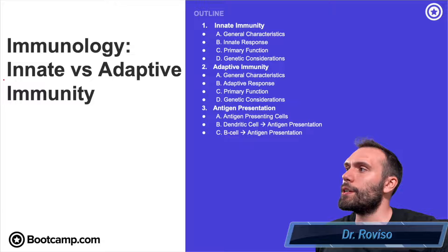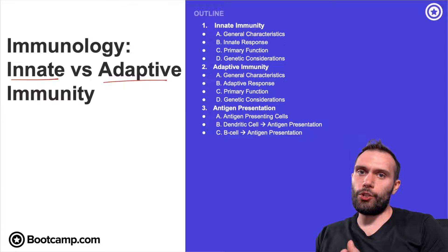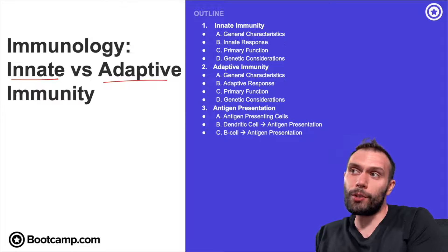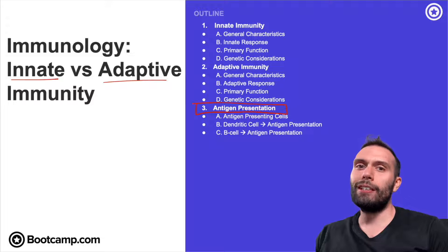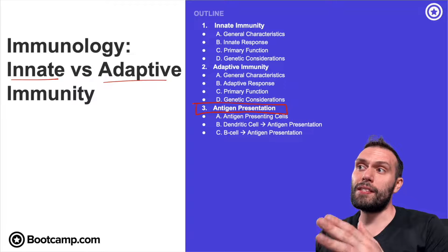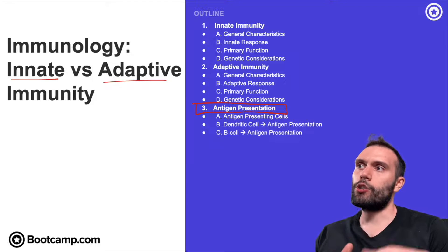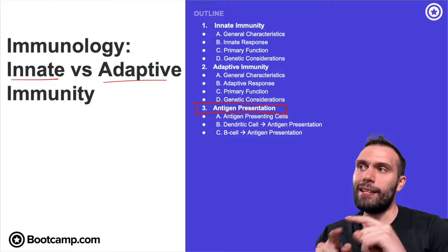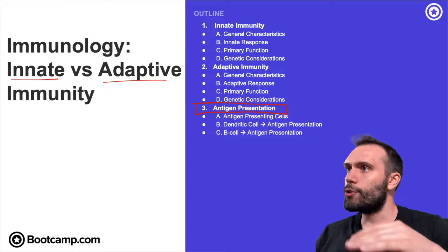Hey everybody, Dr. Revizo here. In this video we're going to talk about innate immunity and then we'll touch on adaptive immunity in the next video. We really just want to compare these two and see what's similar, what's different, what type of cells we're talking about, and then we'll use this as an opportunity to introduce antigen presentation and that whole process. We'll keep adding layers to it as we go.